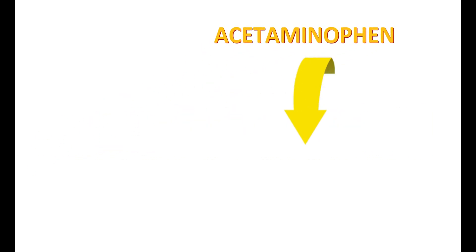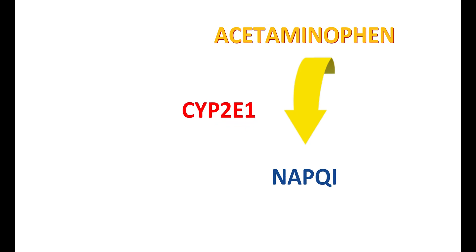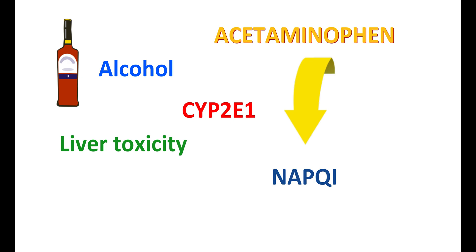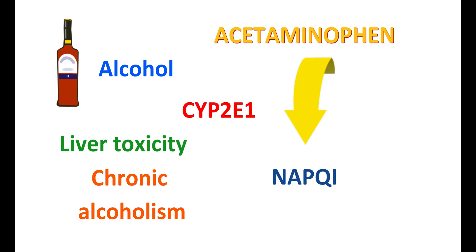Regarding the effect of alcohol: acetaminophen is metabolized by the cytochrome P450 system into its toxic metabolite, carried by the specific enzyme CYP2E1. When alcohol is co-administered with acetaminophen, alcohol also competes for the same cytochrome P450 metabolic enzyme, which may actually reduce liver toxicity. However, in people with chronic alcoholism, alcohol can further increase the liver damage produced by acetaminophen.